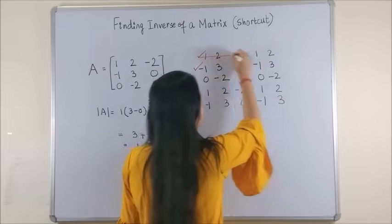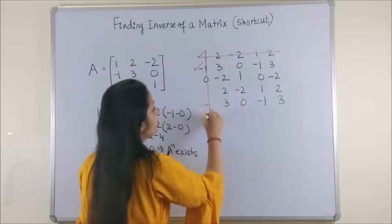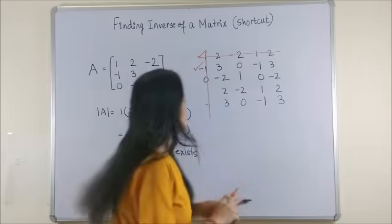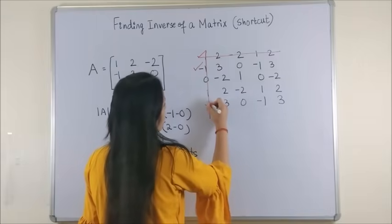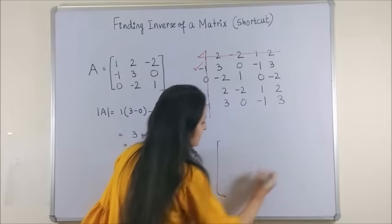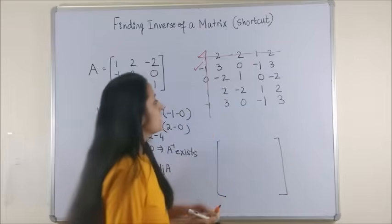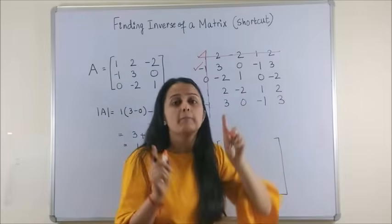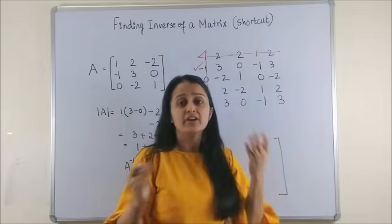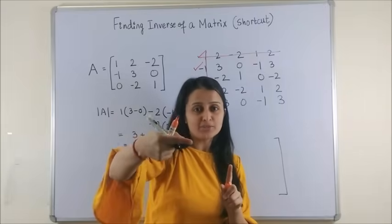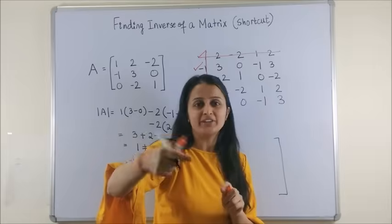Now just cancel out the first row and the first column. This is the part of your procedure. So once we have done that, now keep in mind you create this. Now we are going to apply the operations column wise, but we are going to write row wise. Why? Because you remember we used to take the transpose of the given cofactor matrix.